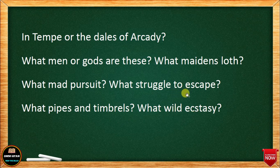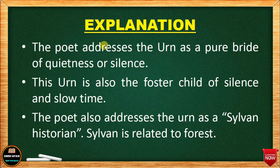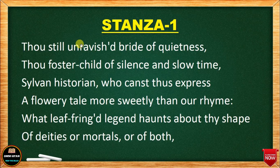I would like to request all students to keep the book in front of you, because it will not be possible for me to scroll back again and again. So keep the book in front of you — it will help you. Here we are going to see the explanation. I will tell you the explanation, but first look at the meaning of 'unravished bride' in the first line.